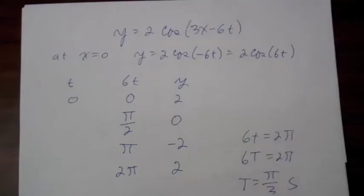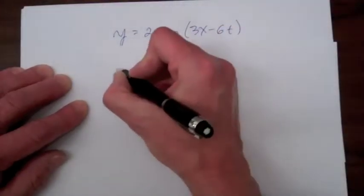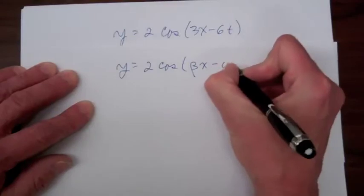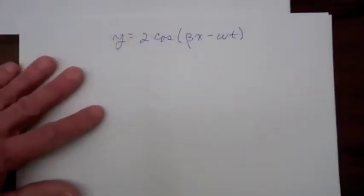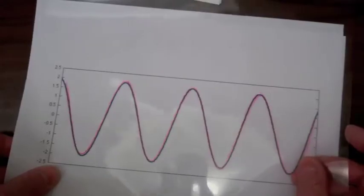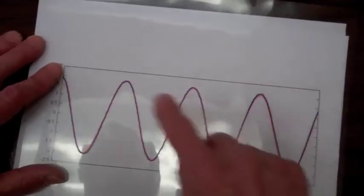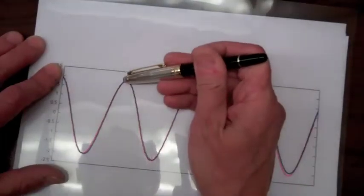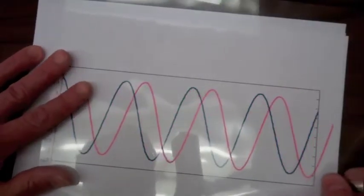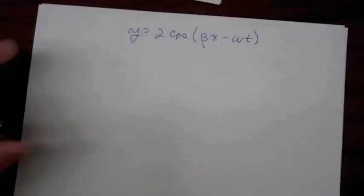We can identify 3 as beta and 6 as omega, and write a more general form for our wave function as y = 2cos(βx - ωt). For this arbitrary wave with wave number beta and frequency omega propagating like this, let's pick one of these crests, occurring when the argument of the cosine equals 2π radians, so that as time increases, x has to increase so that βx - ωt remains equal to 2π.